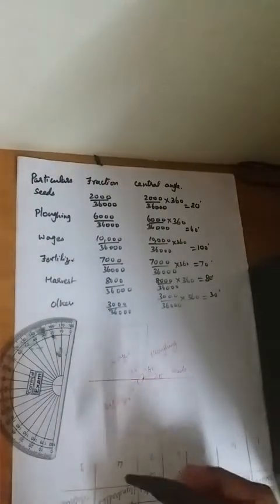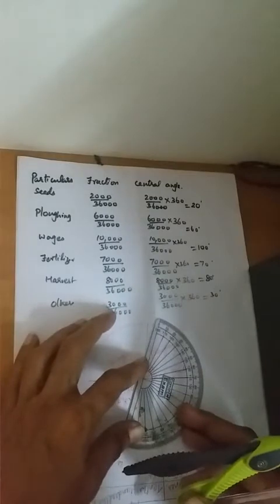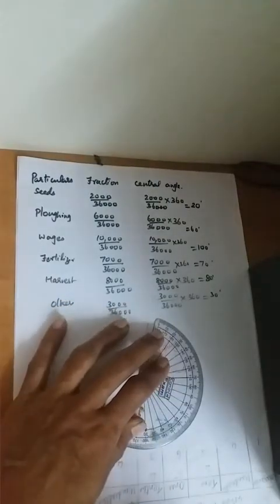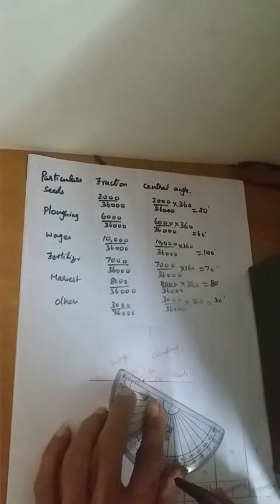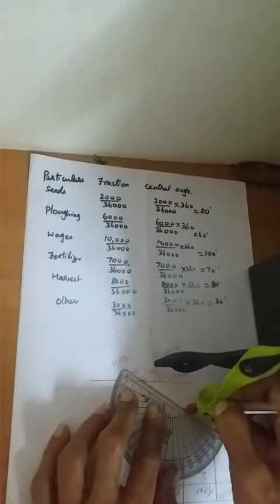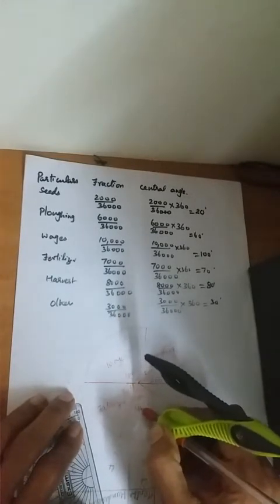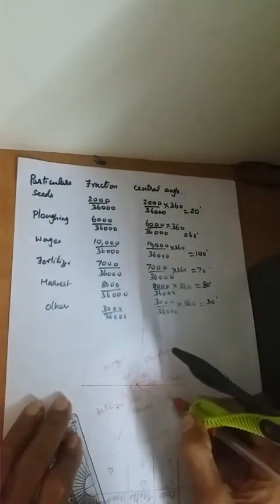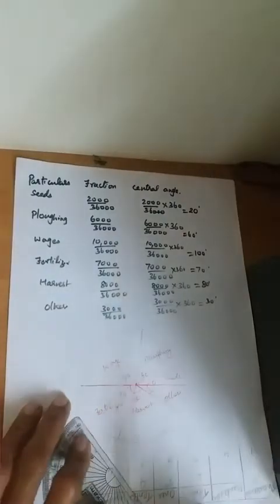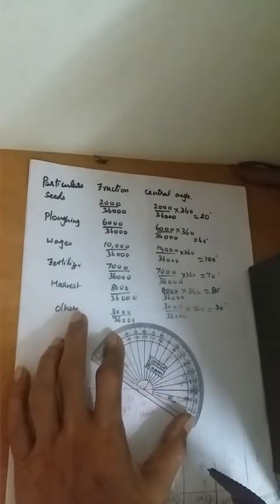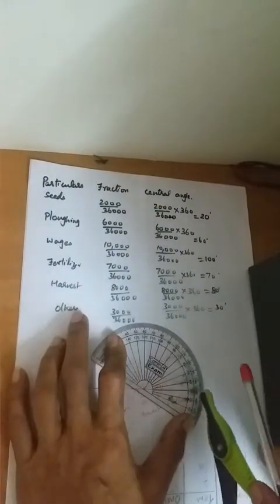The next category is 'Harvest' at 80 degrees. Mark 80 degrees — acute angle — and join it. The heading is 'Harvest', 80 degrees. Then 'Others' will automatically be 30 degrees. You can measure and verify — exactly 30 degrees is coming.